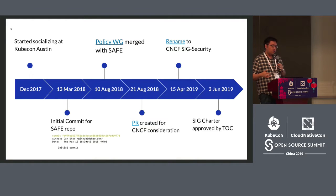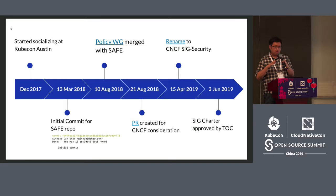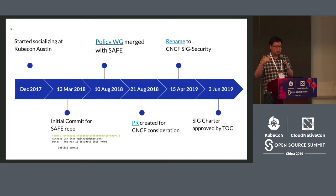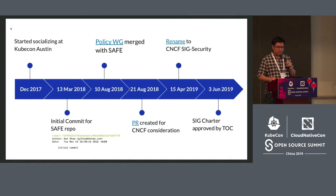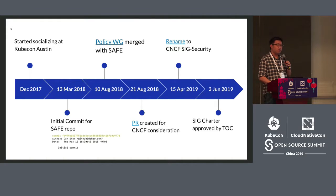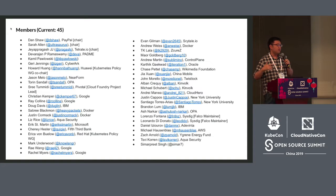We continued on, merged with the policy working group, which is looking at what cloud native policies should be and how projects like OPA get integrated. In August 2018 we created a PR for CNCF consideration, and thanks to our chairs and our sponsors at the TOC, we achieved SIG status in June of this year. We are a fairly new SIG but have quite good participation — right now we have 45 members including people from cloud vendors, security providers, end users, and financial users.